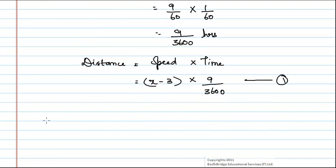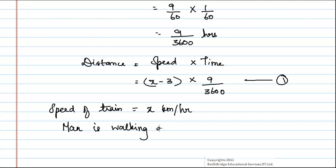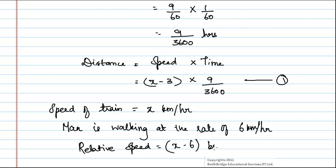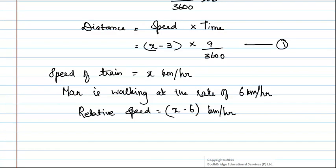Now, let us consider the second case where speed of train is the same, that is x km per hour, and man is walking at the rate of 6 km per hour in the same direction. Hence, relative speed is equal to x minus 6 km per hour. Here, time is given as 10 seconds.